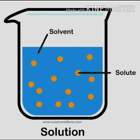Next, Solution. Mixing of solutes and solvent is called solution. Examples: Sharbat, Lemon Juice, Fruit Juice, Dal, Kheer, etc.